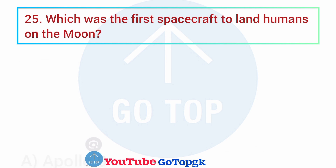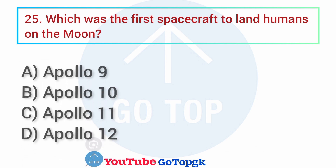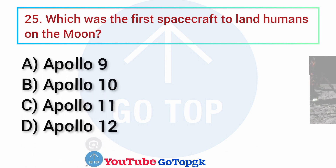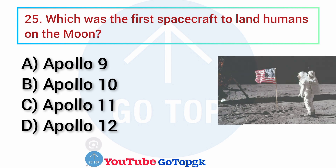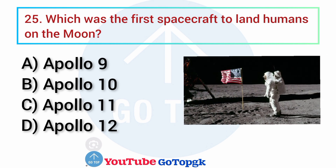Question No. 25. Which was the first spacecraft to land humans on the moon? Options: A. Apollo 9, B. Apollo 10, C. Apollo 11, D. Apollo 12. Your correct answer is option C: Apollo 11.